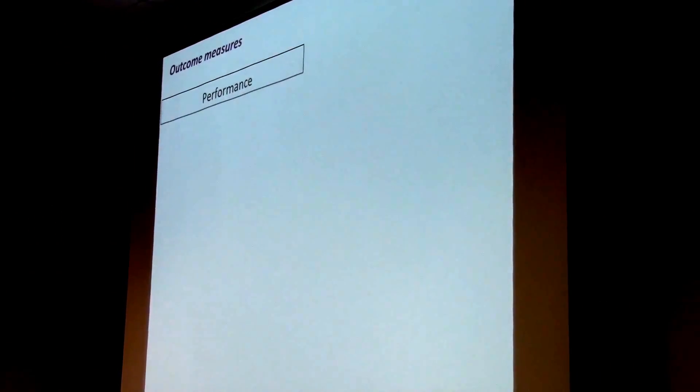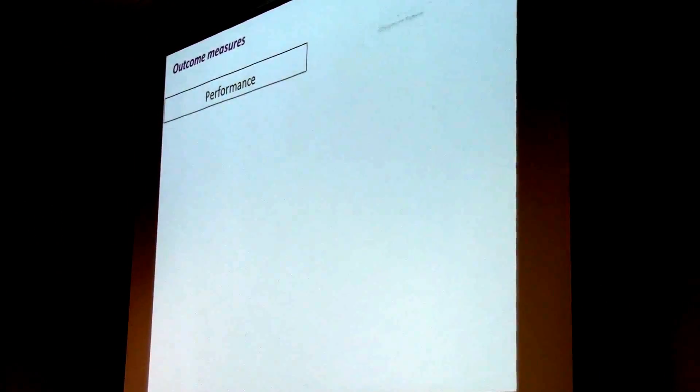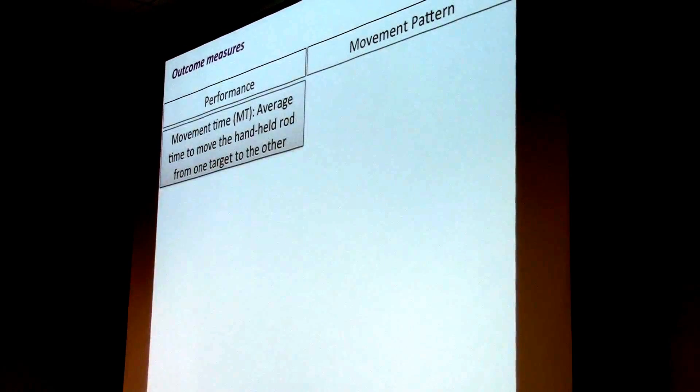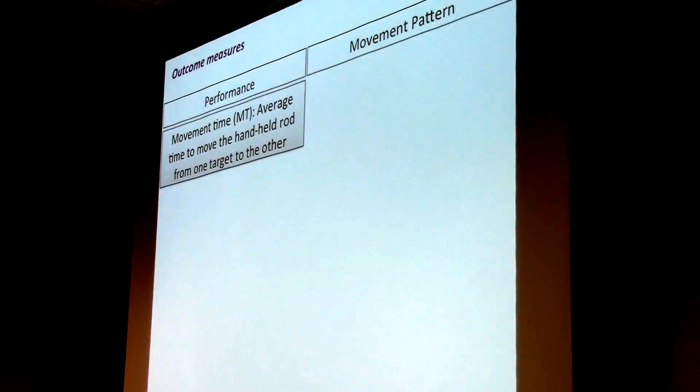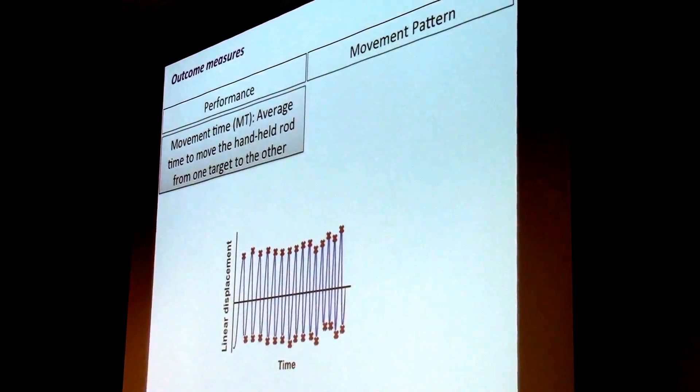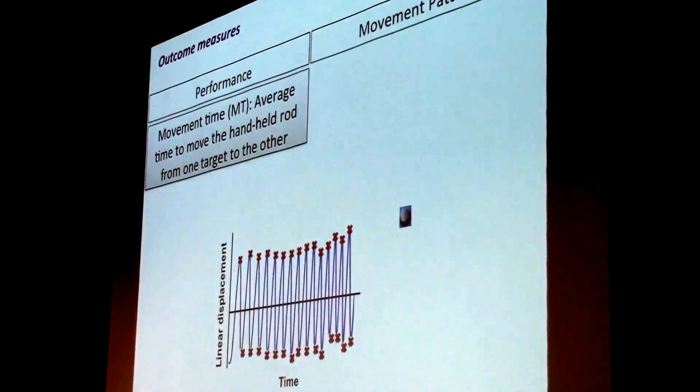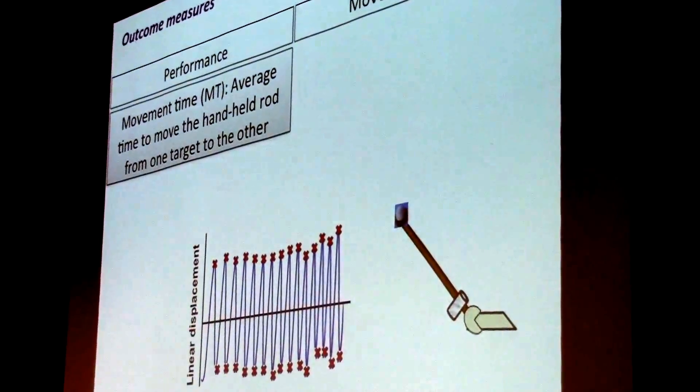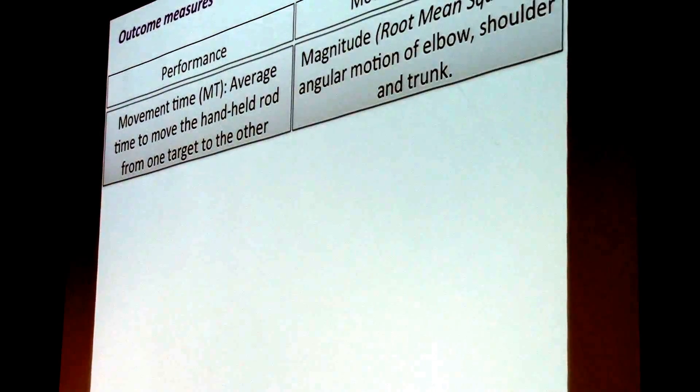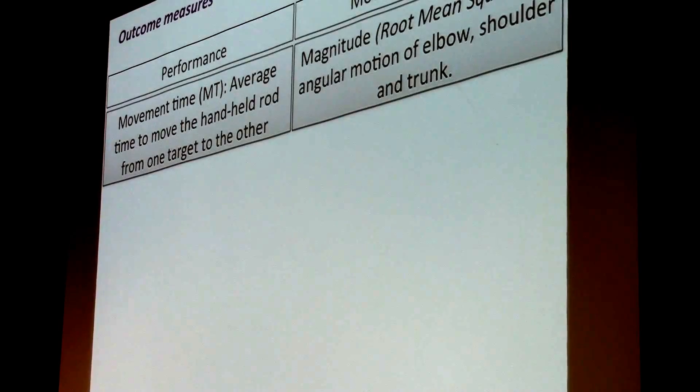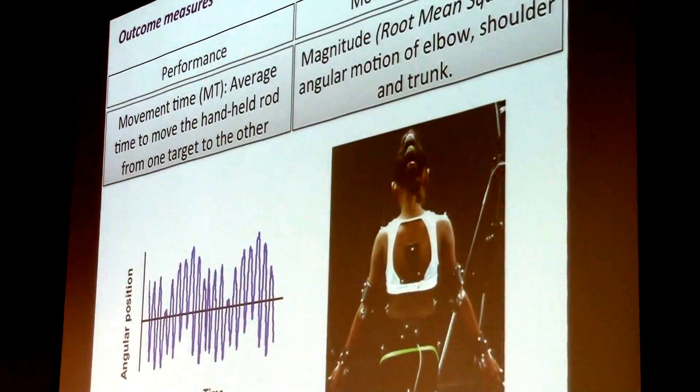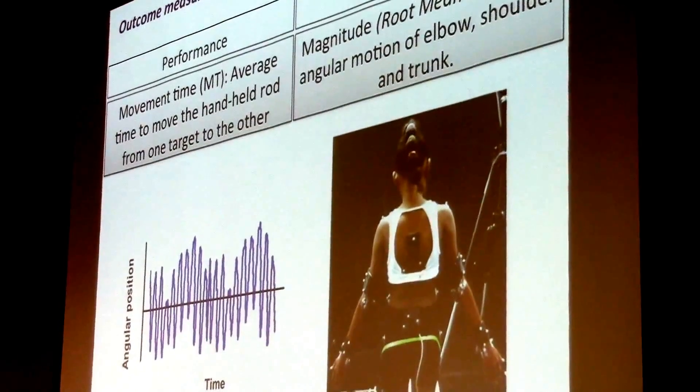And we measured two things. We measured performance and movement pattern. For performance, we used movement time, and that was the average time to move the handheld rod between the two targets. We measured this from a marker positioned close to the tip of the rod. The movement pattern was the magnitude of motions of the elbow, shoulder and trunk, which we measured using markers positioned at particular segments.